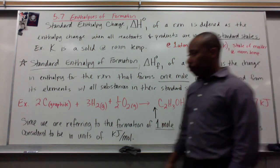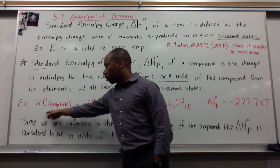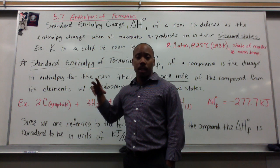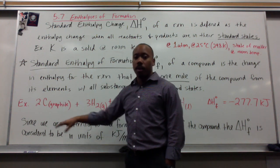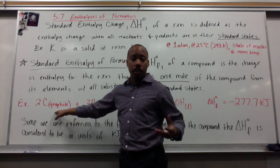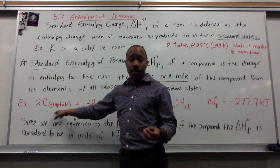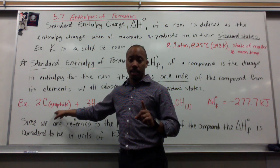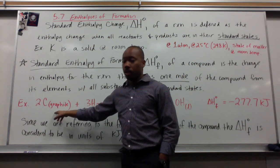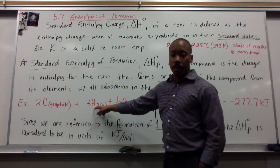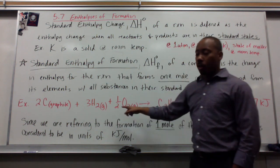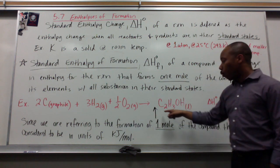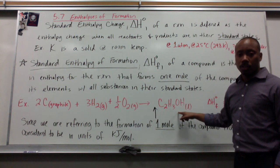For example, if I have two moles of carbon in the form of graphite, this is the elemental standard state of carbon. There are other forms, like diamond would also be a state of carbon in elemental form, but not the standard state. The standard state is graphite. So two moles of graphite react with three moles of hydrogen gas, along with one half mole of oxygen gas to produce one mole of ethanol, C₂H₅OH.